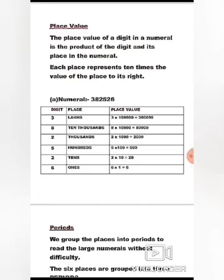Place value: the place value of a digit in a numeral is the product of the digit and its place in the numeral. It means if you have to write the place value of a digit, you must multiply the digit with its place. Each place represents 10 times the value of the place to its right — tens is 10 times more than ones, 100 is 10 times more than tens, 1,000 is 10 times more than hundreds, and so on.